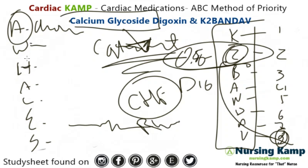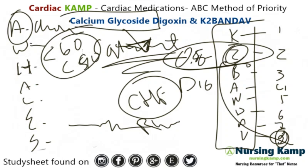When do we hold it? Heart rate less than 60, systolic less than 90 — follow your agency policy. Also, you hold it for signs and symptoms of dig toxicity: anorexia, nausea, diarrhea, dysrhythmias, abdominal pain, and visual halos.